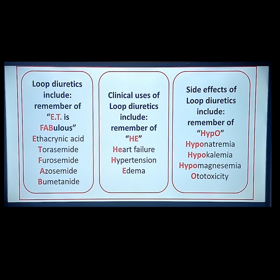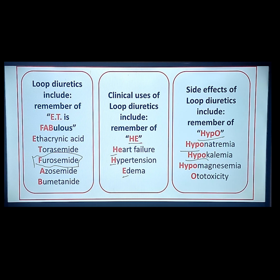A summary of loop diuretics: the drugs can be remembered with the mnemonic IT-FAB — Ethacrynic acid, Torsemide, Furosemide, Azosemide, and Bumetanide. The most common is furosemide. Clinical uses of loop diuretics: remember HHE — heart failure, hypertension, and edema. Side effects to remember: hypo — hyponatremia, hypokalemia, hypomagnesemia, and ototoxicity manifested through tinnitus.